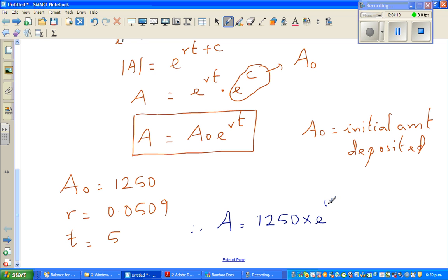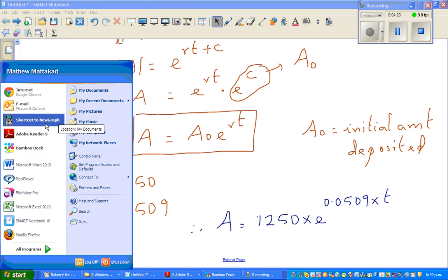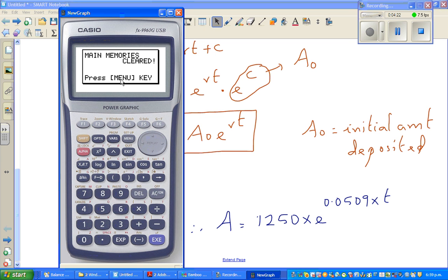So this is my calculator. So menu, run. So 1250 times e bracket 0.0509 times...